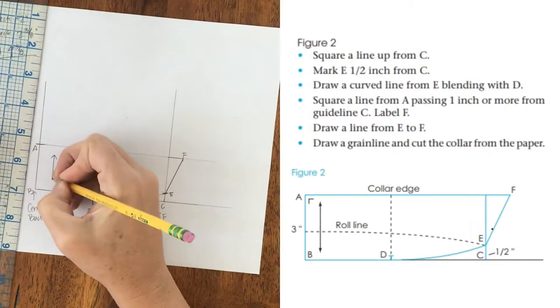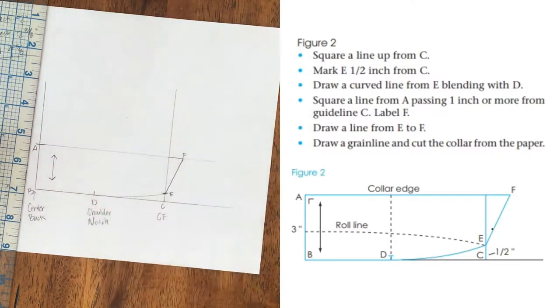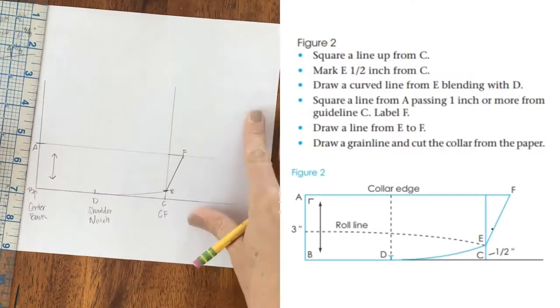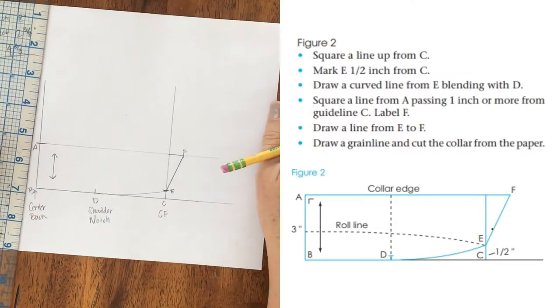Now if you read this chapter, it talks about grain lines on the collar, and that you can actually cut it on the straight grain. You can cut it on the cross grain, or you can cut it on the bias line. It's up to you, so read about that.